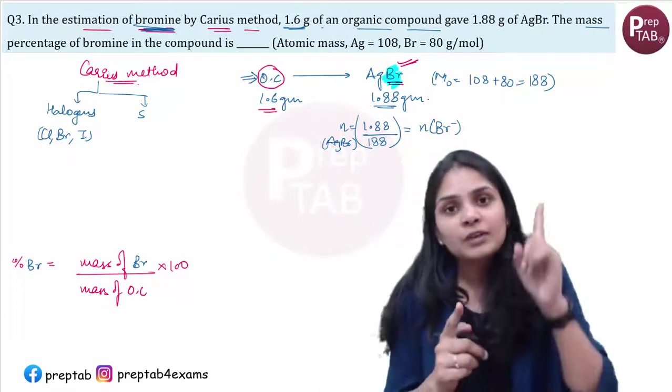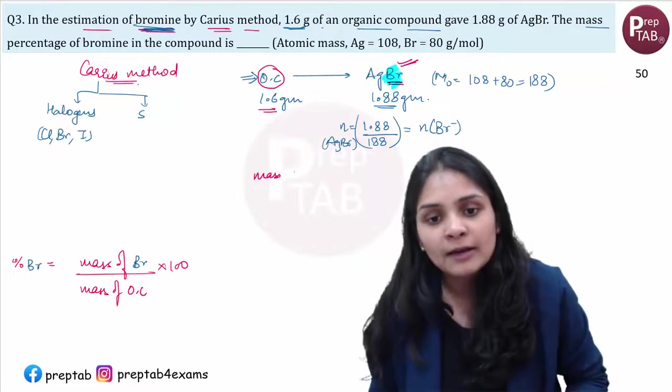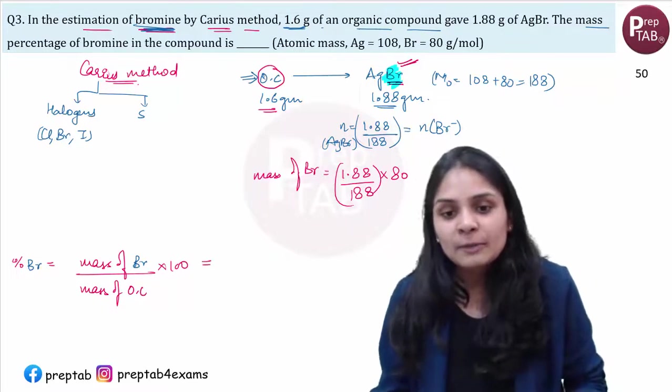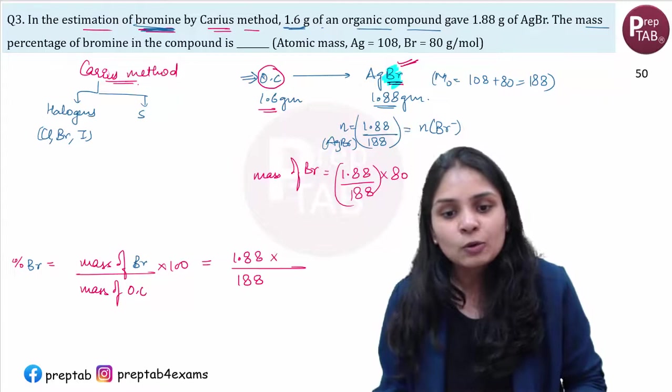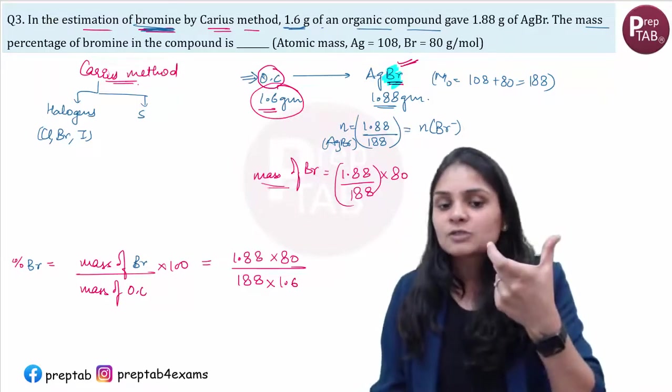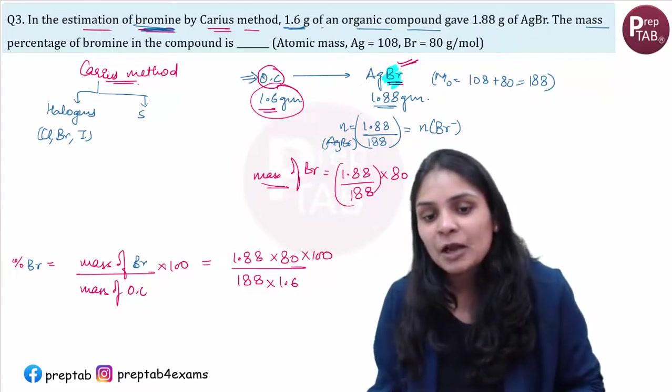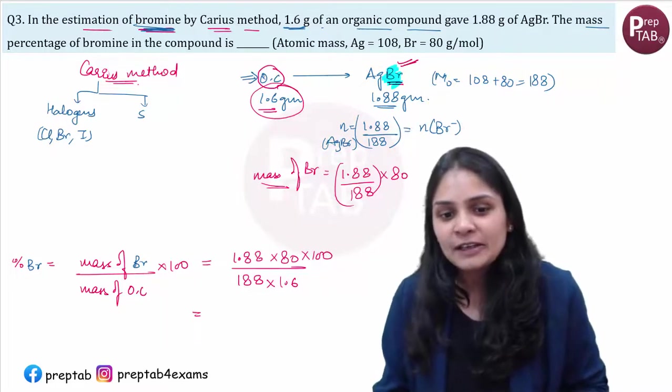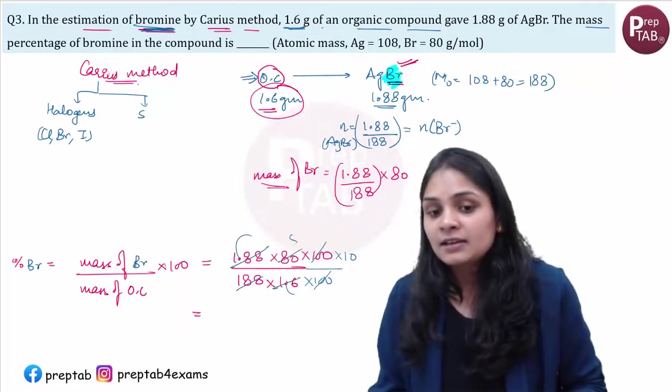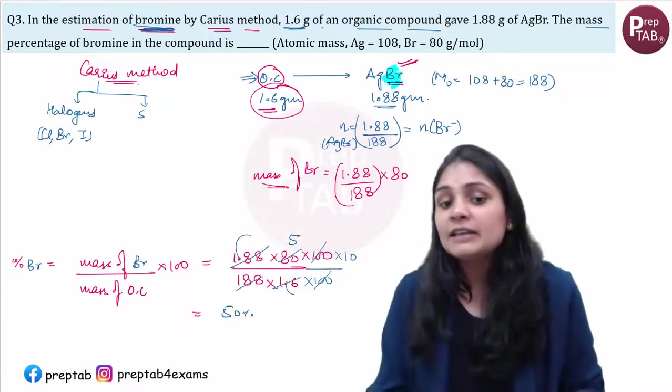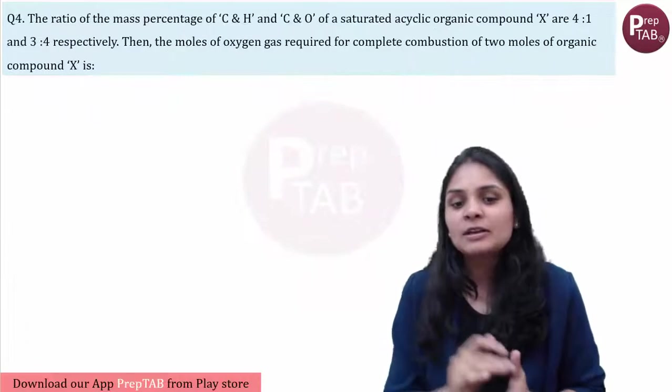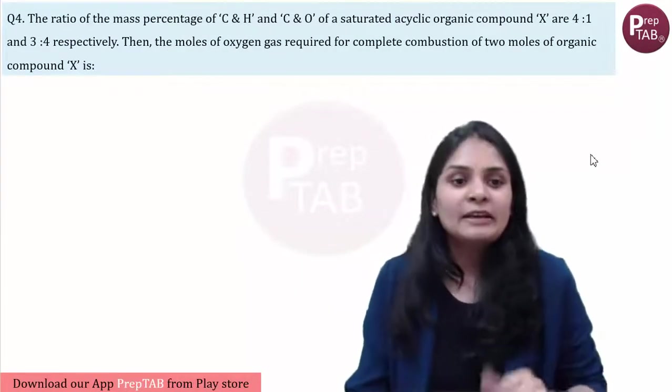So it will be 1.88 divided by 188 into 80, this is the mass of bromine divided by mass of your organic compound 1.6 gram. Now all you have to do is solve this. Let's remove the decimals, 188 will get cancelled, 100 will get cancelled, 16, 5 times is 80, so this is 50%. That means in this molecule there is 50% bromine. So your right answer is 50.